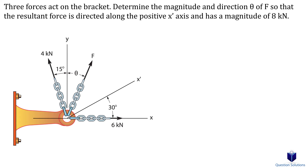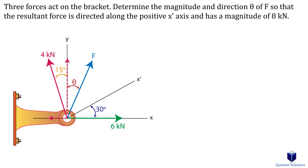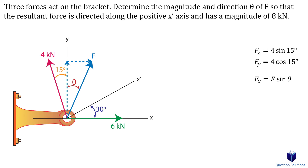Let's take a look at this problem where we need to figure out force F and its angle so that the resultant force would have a magnitude of 8 kilonewtons and be directed along the x-prime axis. We break down the given forces into x and y components. For the 4 kilonewton force, the x component is opposite to the angle so it's sine, and the y component is adjacent so it's cosine. For force F, we break it into components the same way. The 6 kilonewton force only has an x component since it's directed along the x-axis.